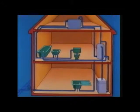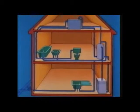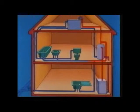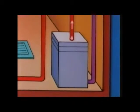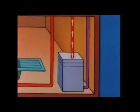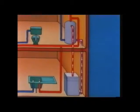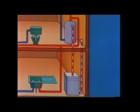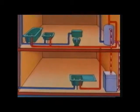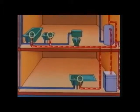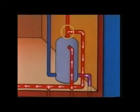Convection currents are an important factor in the design of the domestic hot water system, providing a constant supply of hot water in the storage tank. The water is heated in the boiler and rises by convection to the top of a storage tank above. Cooler water from the bottom of the storage tank flows into the boiler to replace the hot. A continuous circulation is set up and gradually the storage tank becomes filled with hot water. The hot water taps are connected to the top of the tank where the water is hottest.